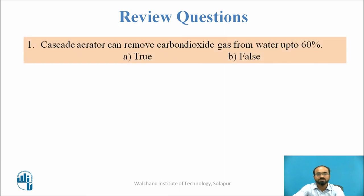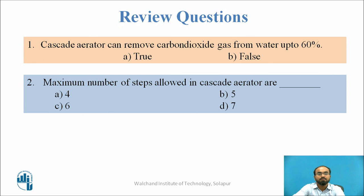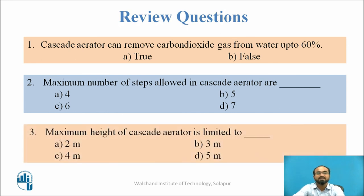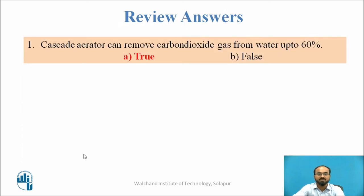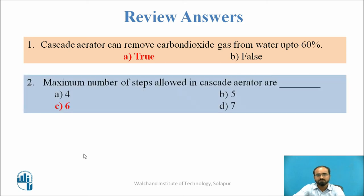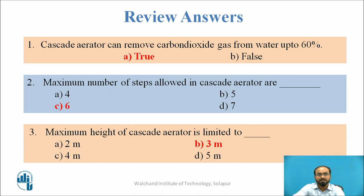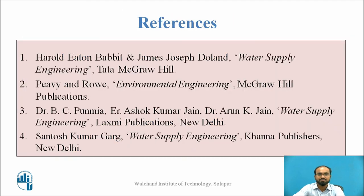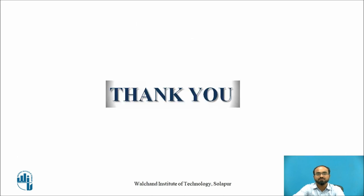Review questions: First, a cascade aerator can remove carbon dioxide up to 60 percent — this statement is true. Second, the maximum number of steps allowed in a cascade aerator is 6. Third, the maximum height of a cascade aerator is limited to 3 meters. These are the references used to make this presentation. Thank you.